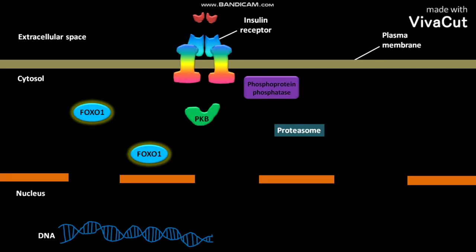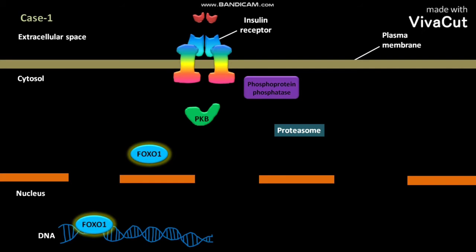In Case 1, the unphosphorylated FOXO1 acts as a nuclear transcription factor. The unphosphorylated FOXO1 present in the cytosol of a cell enters the nucleus and binds to the response element in the DNA. This binding triggers the transcription of associated genes.